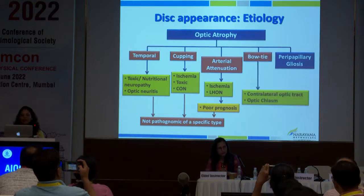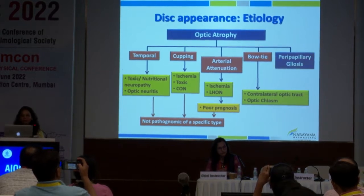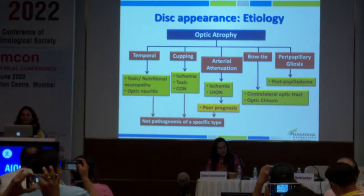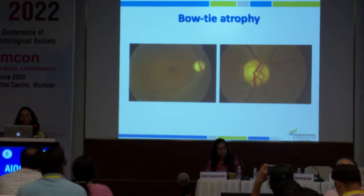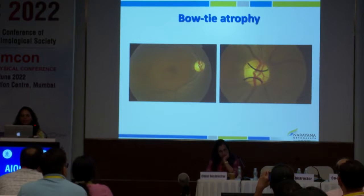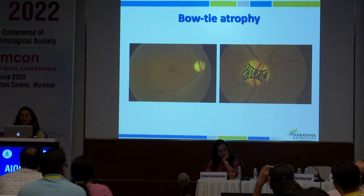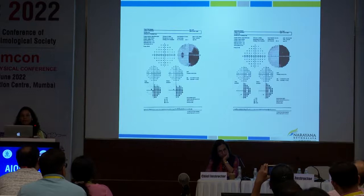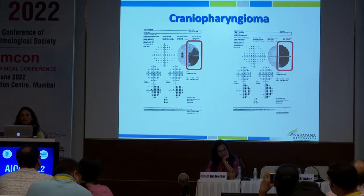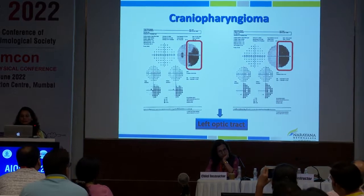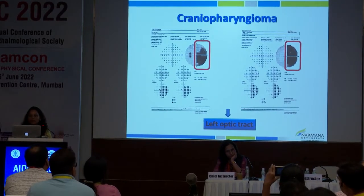Bow tie atrophy classically indicates a contralateral optic tract lesion or chiasmal involvement. In bow tie atrophy, the superior and inferior parts of the disc are pink — only the middle part is pale. If you see a left eye bow tie atrophy, look for a right tract lesion, such as a right homonymous defect. This example is from a craniopharyngioma causing a left optic tract lesion.